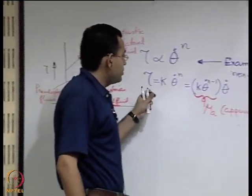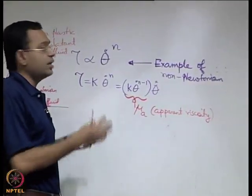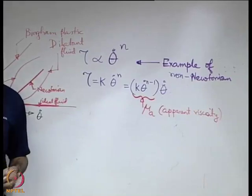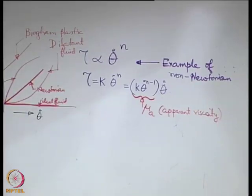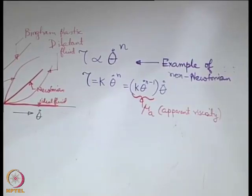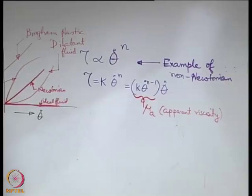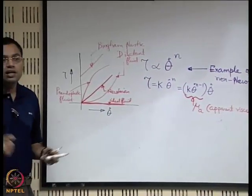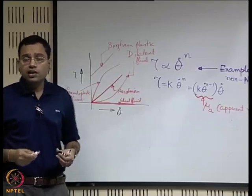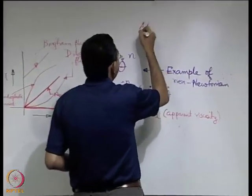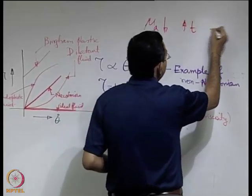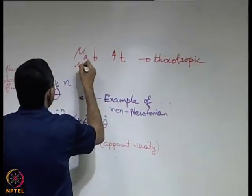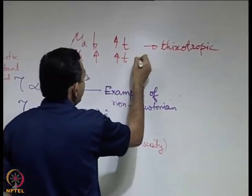There are also fluids whose apparent viscosity changes with time. When apparent viscosity decreases with time under a sustained shear, the fluid is called thixotropic. When apparent viscosity increases with time, the fluid is called rheopectic. These time-dependent behaviors are strongly influenced by the rheological properties of the material.